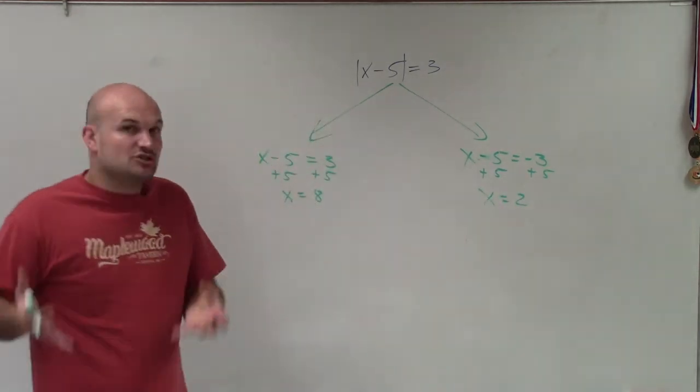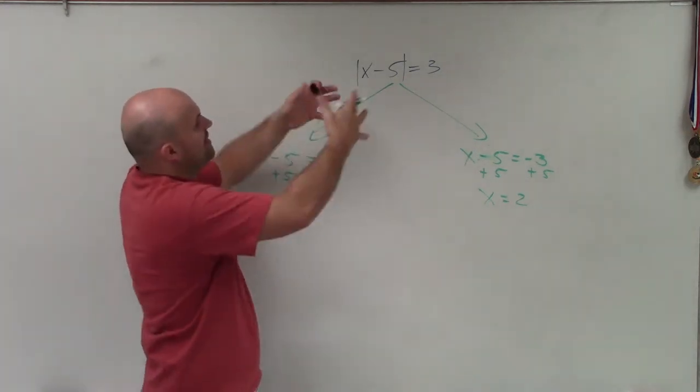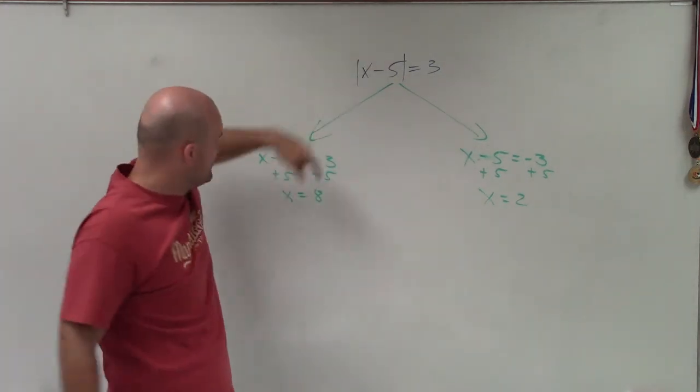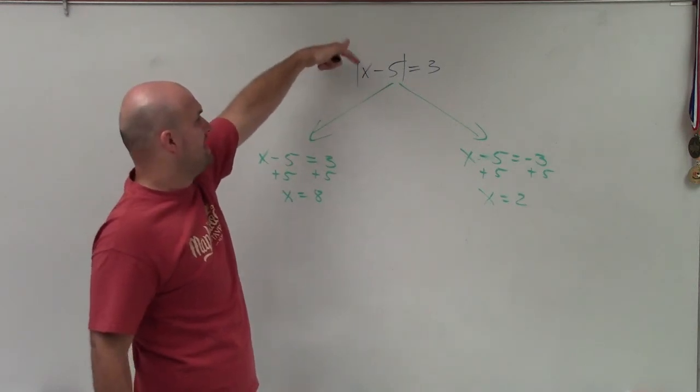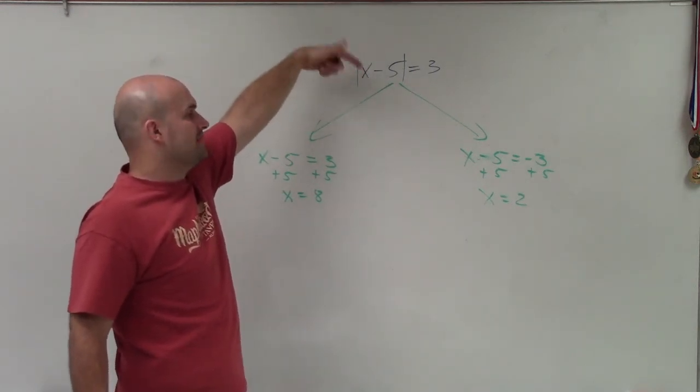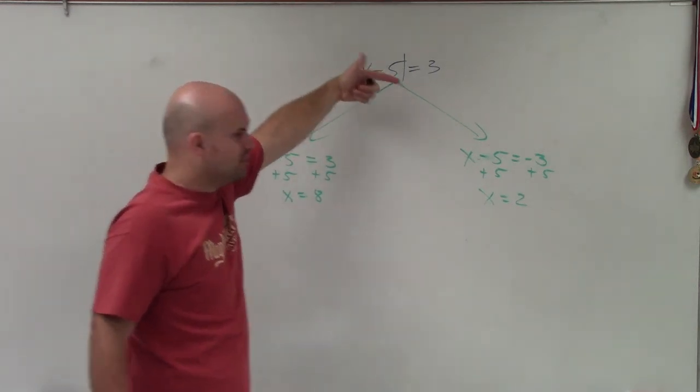And again, let's double check. You can always go back and plug your answers back into your equation to make sure it's correct. So what if I did 8 in for x? 8 minus 5 is 3, positive 3. Absolute value of positive 3 is equal to 3. Good.